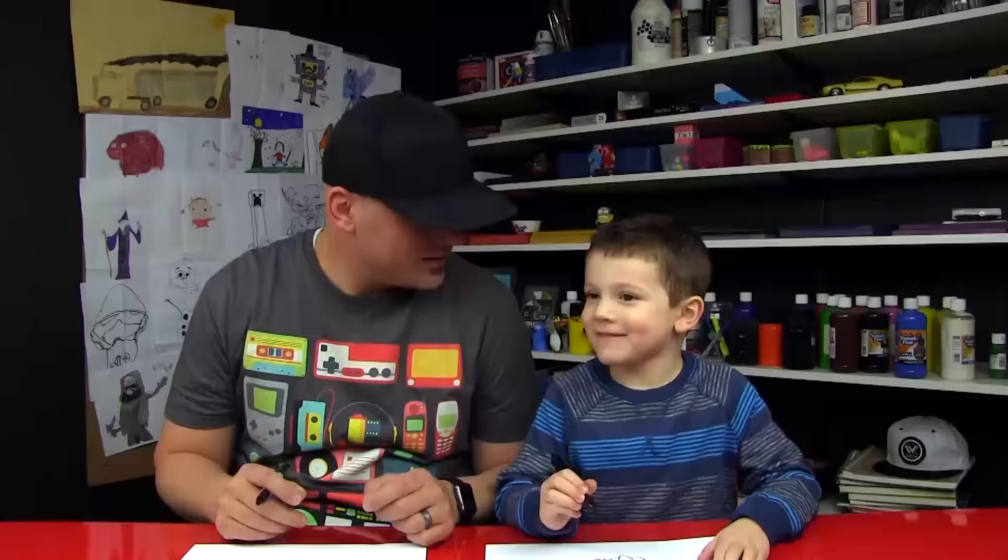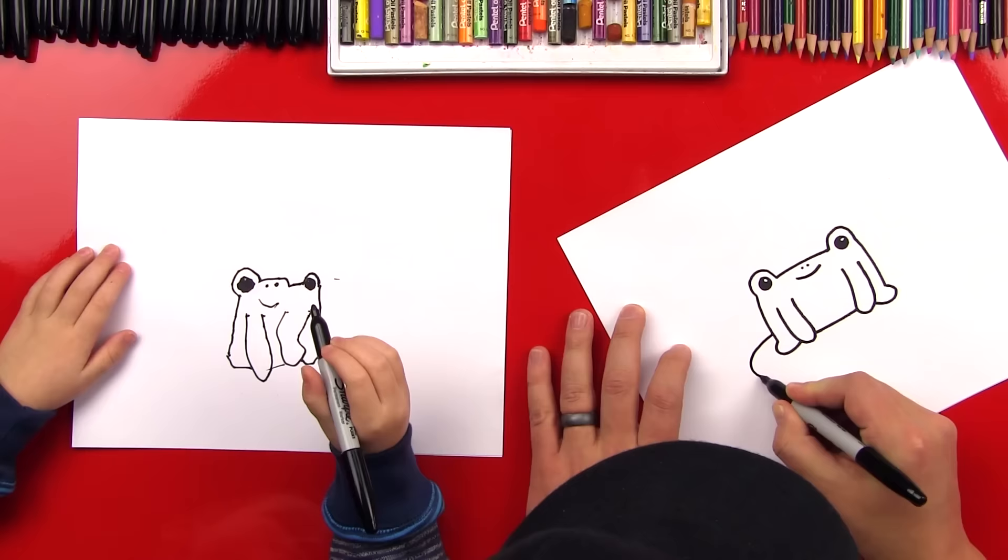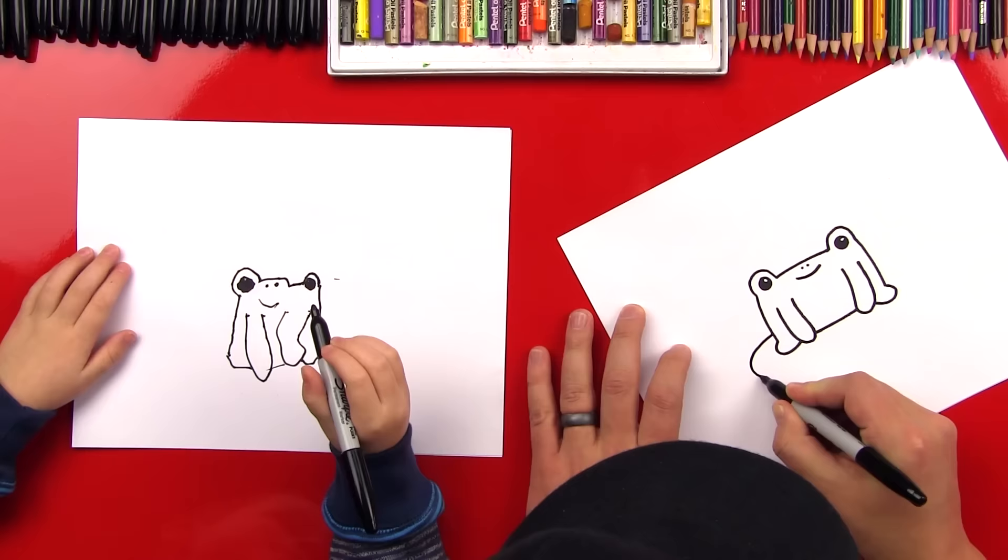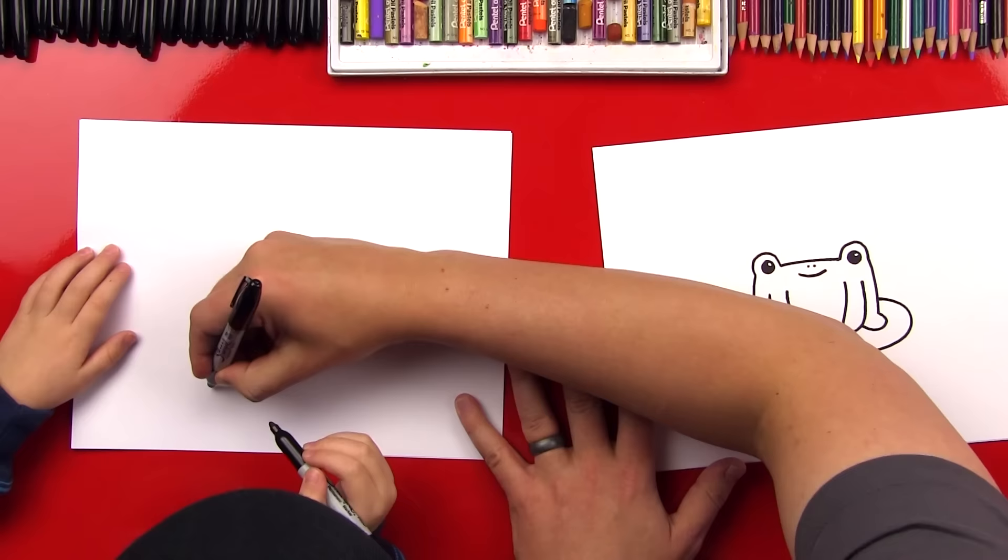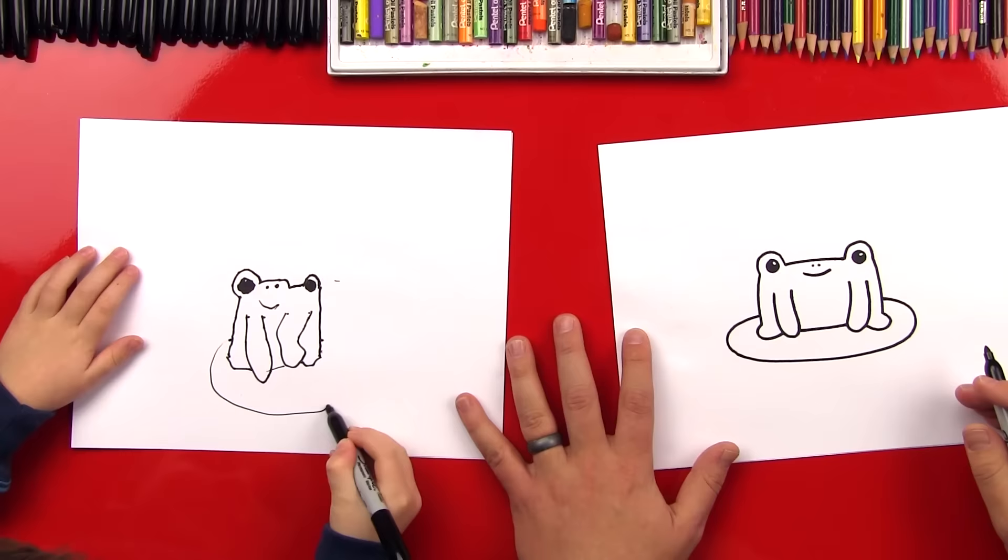All right. What do frogs sit on? Lily pads. Yeah. They sit on lily pads. So let's start right here. We're going to draw a circle that goes all the way around to the other side, or an oval. Goes around like this. Like that. Looks like a lily pad. So you can start here. Go around and then back up to over here. Okay? Okay. Oh, perfect.